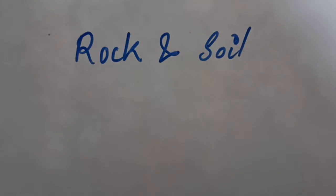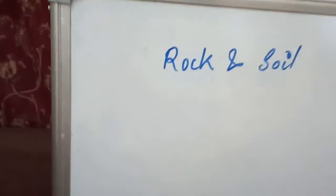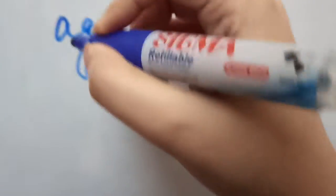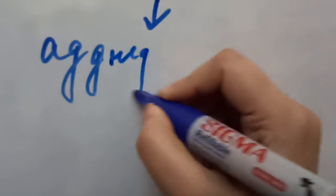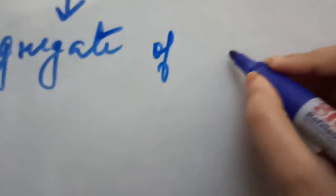Hello students of class 7. Today we will start with the chapter Rock and Soil. So what is a rock? The rock is actually an aggregate of minerals